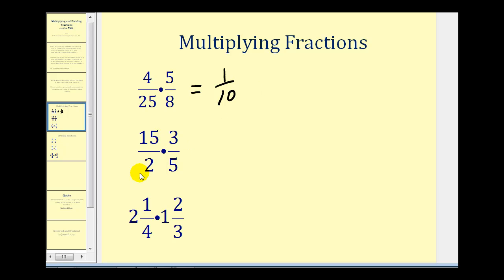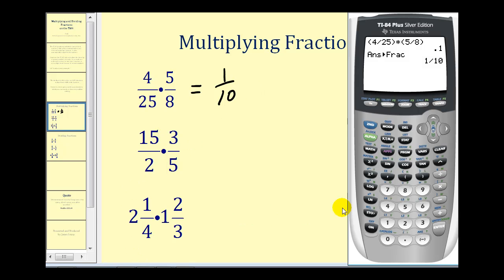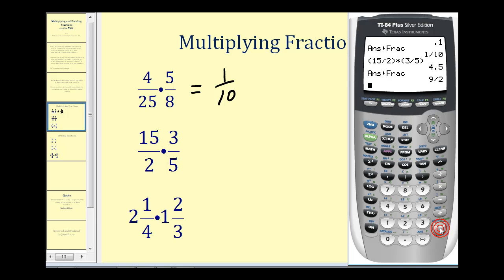Now let's try the next one. We're going to enter, in parenthesis, fifteen divided by two, times, in parenthesis, three divided by five. We press Enter — it gives us the decimal value of this product. But if we want the answer as a fraction, we press Math, Enter, Enter. Notice we have an improper fraction.